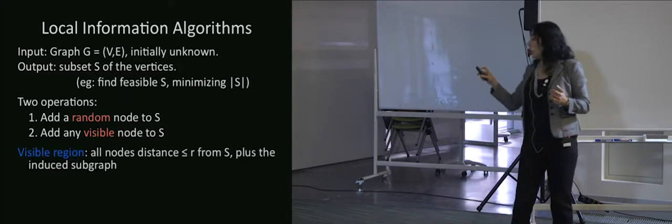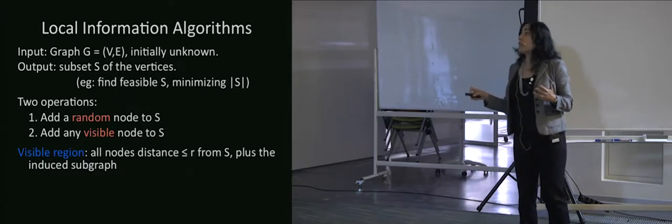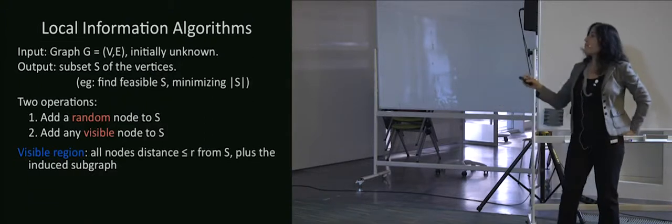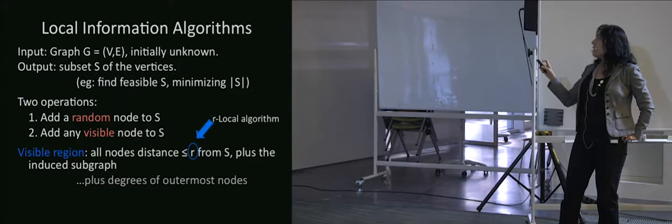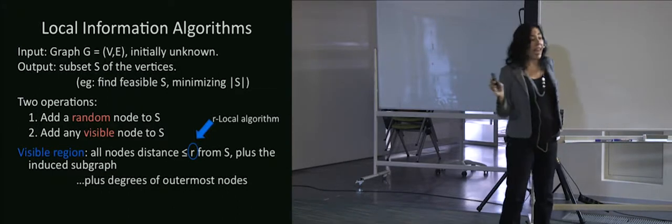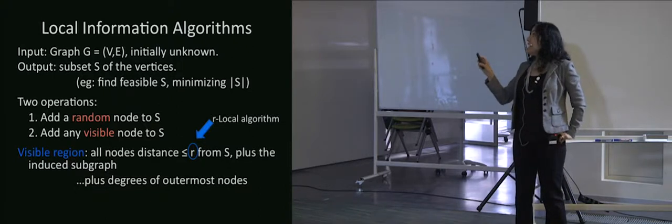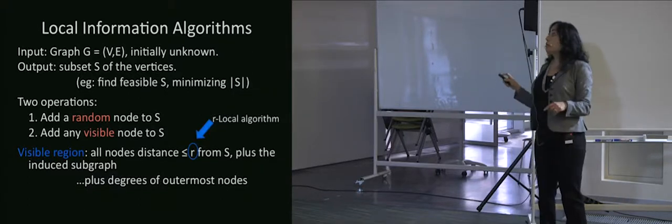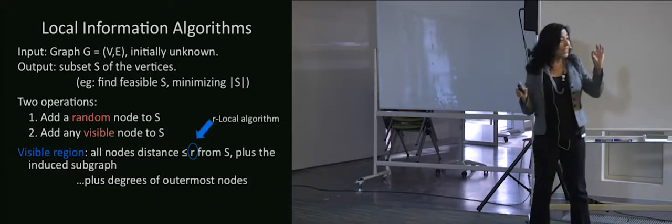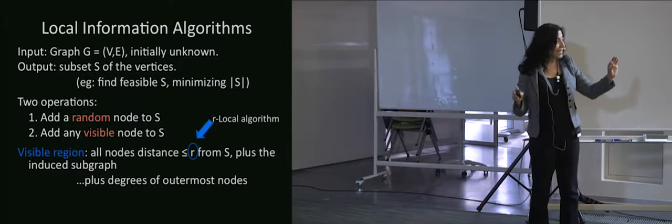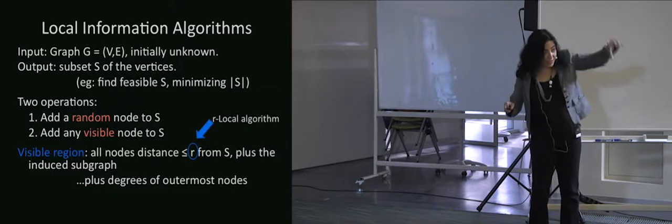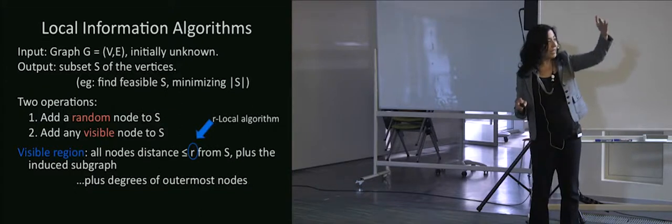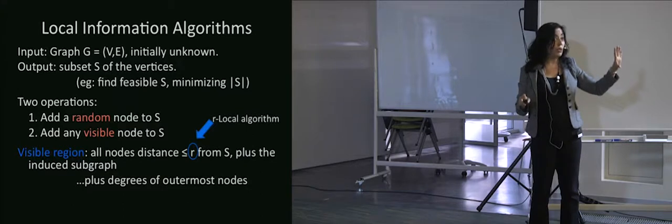Visible means all nodes at distance r from the set plus the induced subgraph plus the number of neighbors of the outermost nodes. If I see things a distance one from my set plus the induced subgraph plus the degrees of the outermost nodes, I call that a one-local algorithm. If I see things distance two plus the induced subgraph plus the degrees of the outermost nodes, I call that a two-local algorithm.